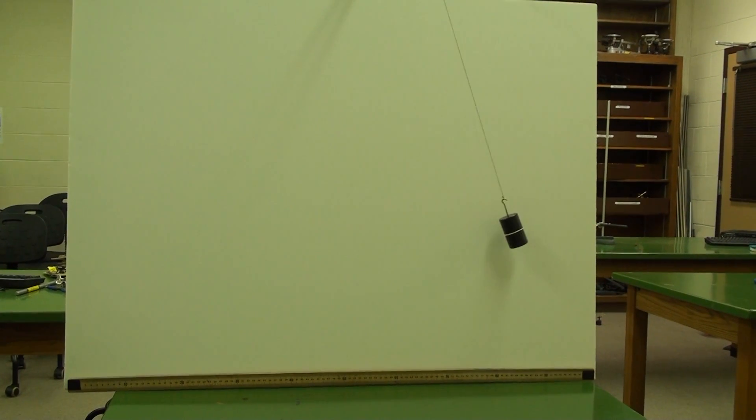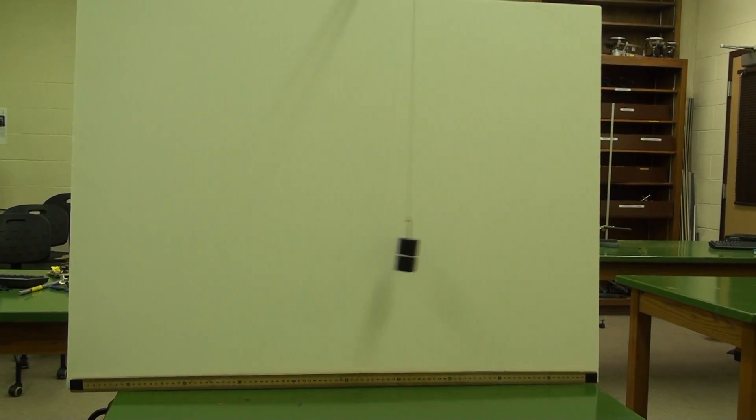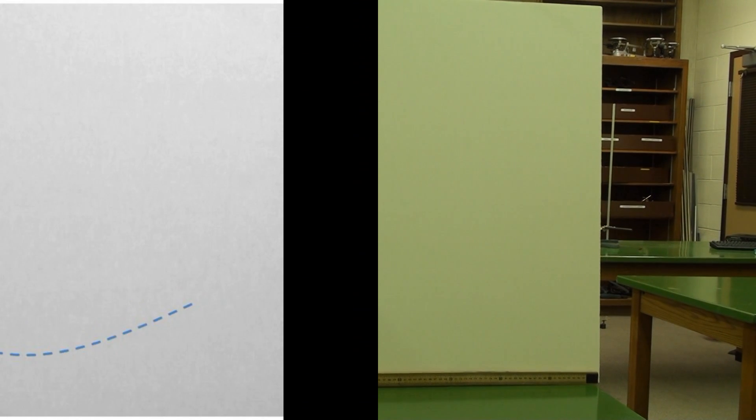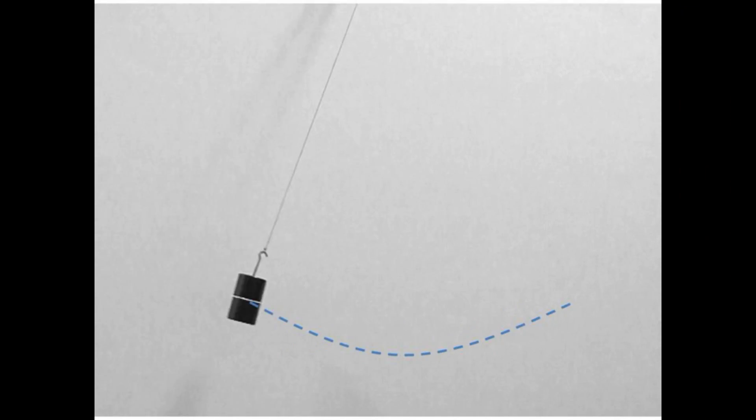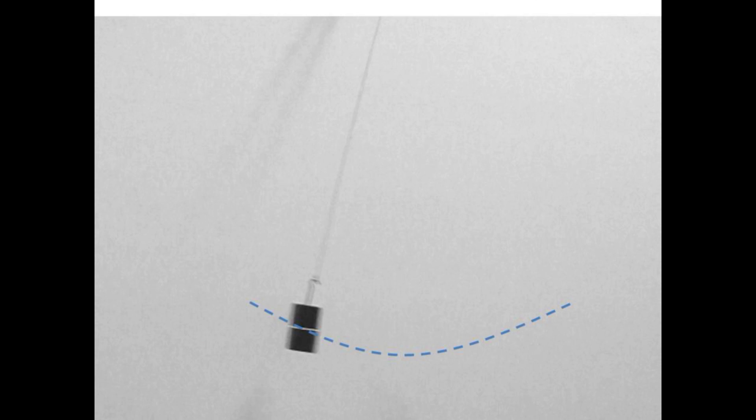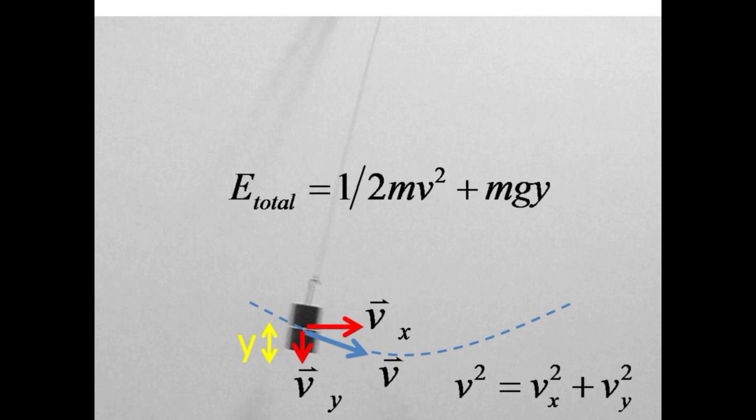A swinging pendulum can illustrate the same energy conservation ideas. When displaced far to the left and released, the pendulum has a potential energy of mgh due to its height h above the equilibrium position. As the pendulum swings downward, it picks up both horizontal and vertical components of velocity while it loses height.